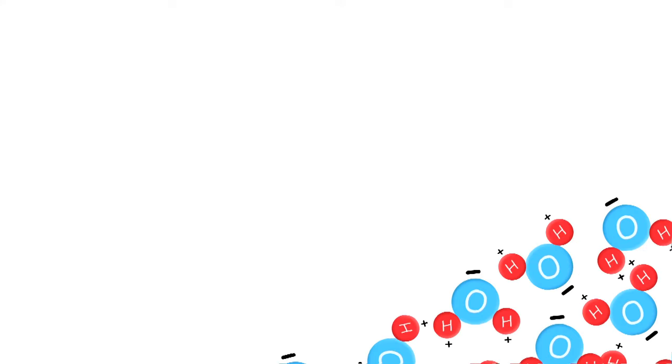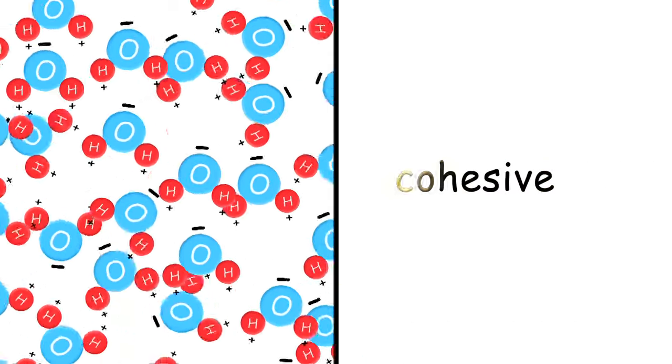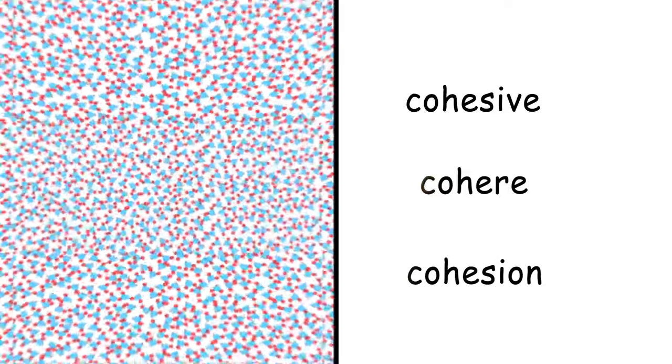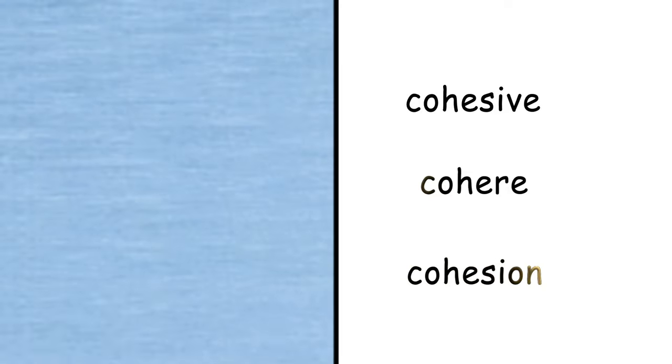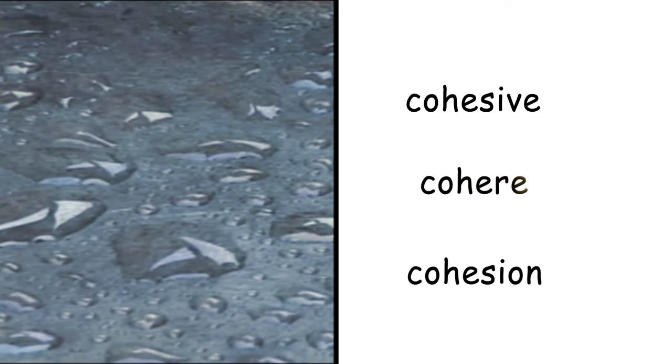Molecules that stay close to each other are called cohesive, and water is highly cohesive. Septillions, octillions of chaotically moving, tightly packed H2O molecules cohere to make a single raindrop.